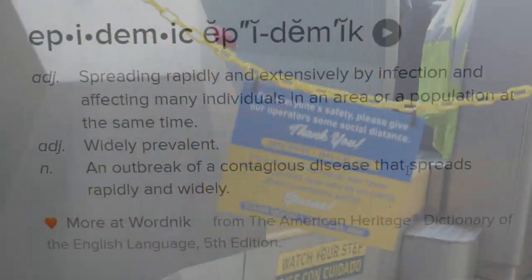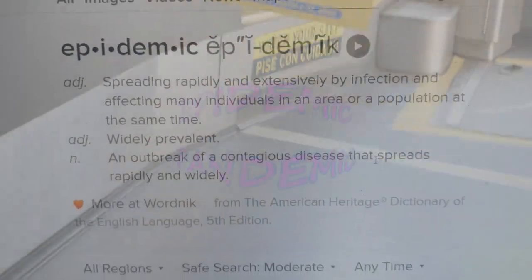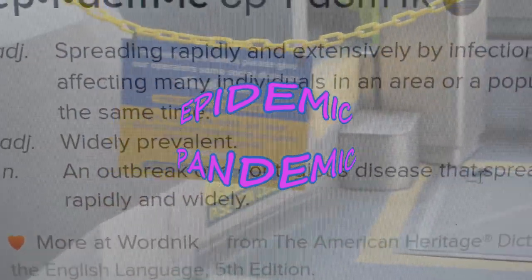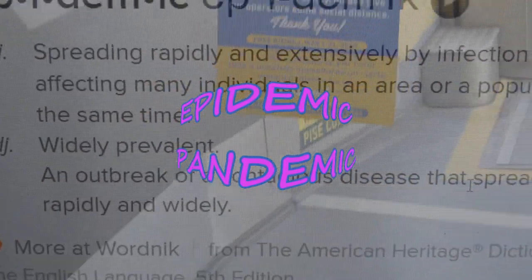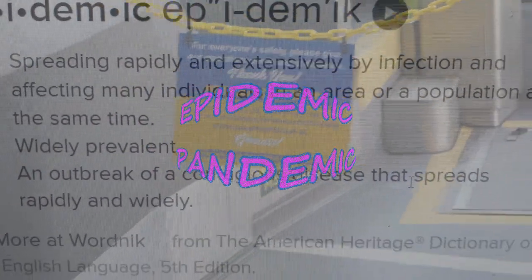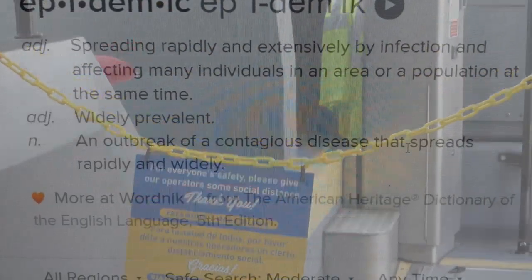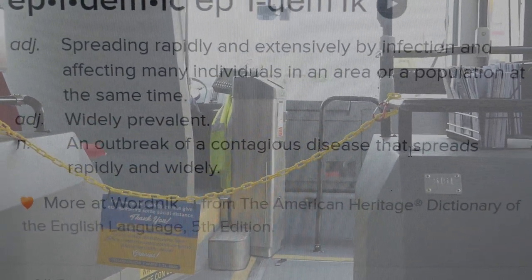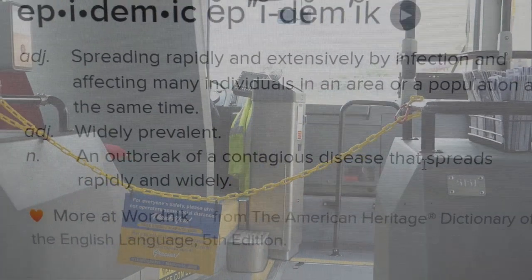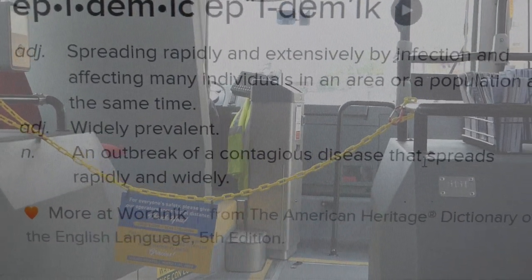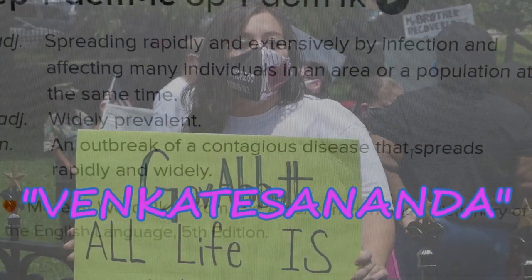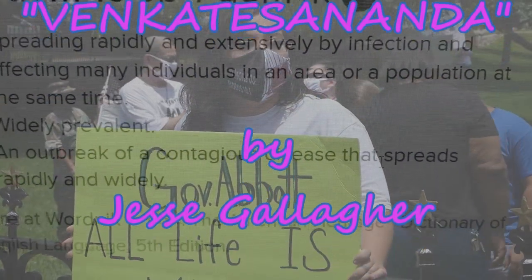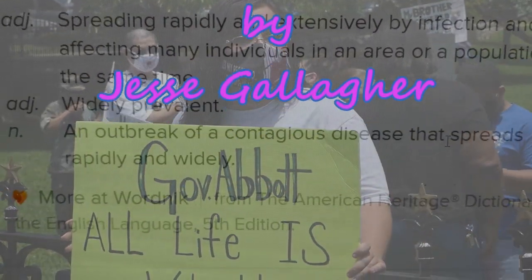Let's talk epidemic. Epidemic, adjective: spreading rapidly and extensively by infection and affecting many individuals in an area or a population at the same time. Adjective: widely prevalent. Noun: an outbreak of a contagious disease that spreads rapidly and widely.